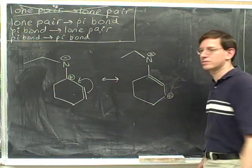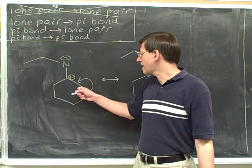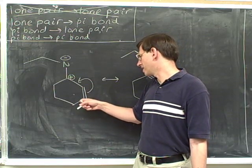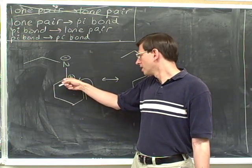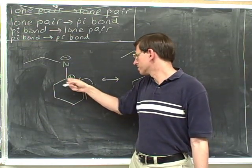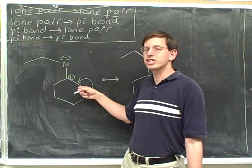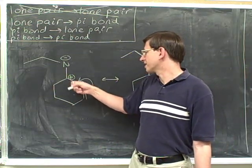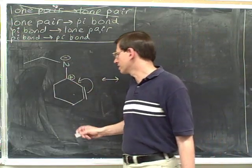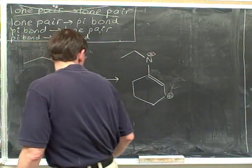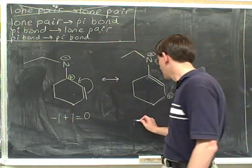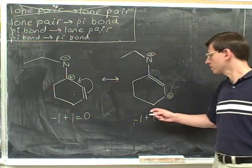Now we can erase the arrow. Notice that the atom in the middle of the arrow is not changing its charge. Only the atom at the far bottom at the beginning of the arrow is changing charge, and the atom at the end of the head is changing its charge. The atom in the middle is not changing its charge because it's just losing this pi bond and gaining this pi bond. Let's double check — we always want to balance the charges. The net charge on this molecule is negative 1 plus positive 1, which equals 0. The charge is balanced.